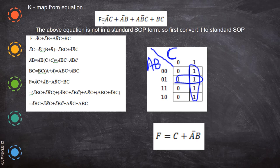When you are given an equation and asked to draw a Karnaugh map and reduce it, first check whether all variables are present. If not, convert it into a standard SOP by substituting the missing variable. Then you can draw the Karnaugh map.